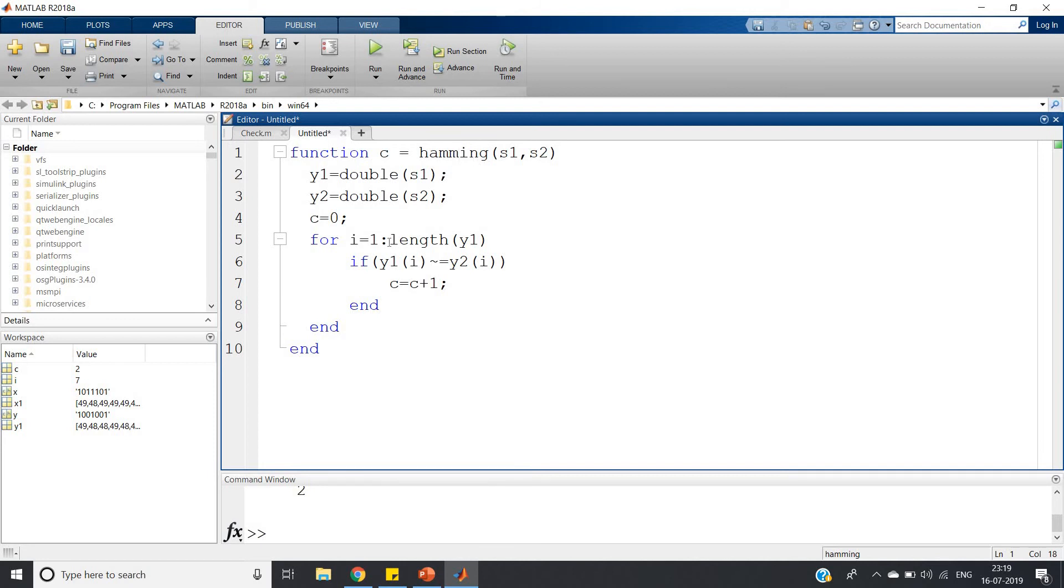After storing this in your required position or required part in your computer, whenever you want you can call the function and you can calculate Hamming distance between two strings - no need to write your code again and again.